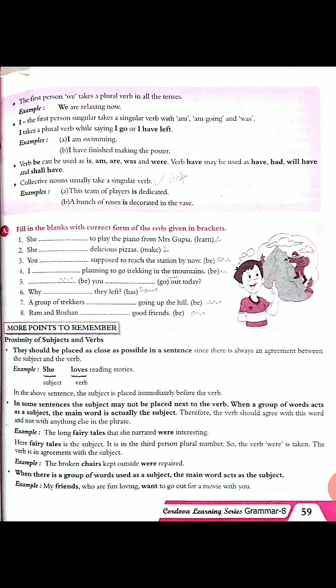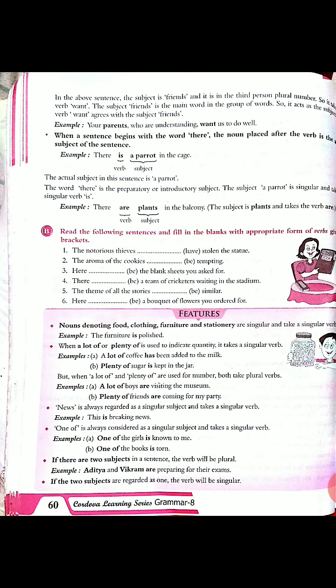There are a lot of exercises here. We will be doing them in class, but I suggest you focus more on speaking, because if you speak in English you will be able to do it correctly and improve both your speaking and writing skills. Now, nouns denoting food, clothing, furniture, and stationery are singular and take a singular verb. For example, 'the furniture' can include a single chair, many chairs, sofa, table — everything — but we will use the singular verb. 'The furniture is polished.' We will not say 'the furniture are polished.' We take furniture as a singular subject.